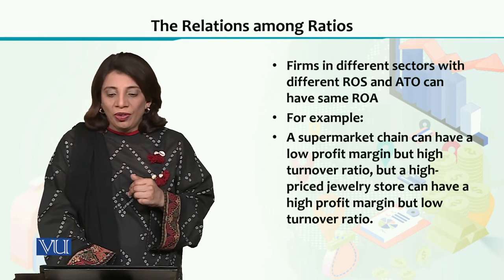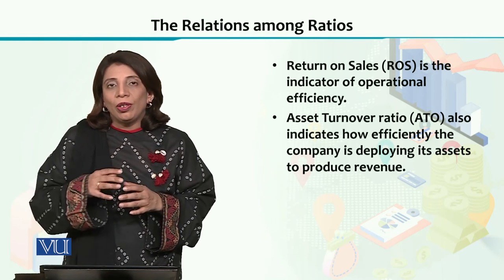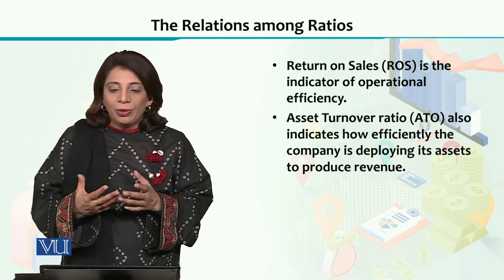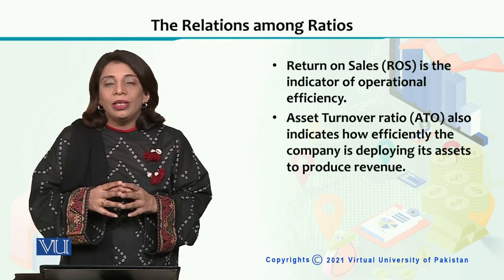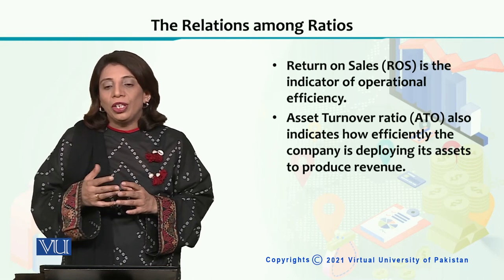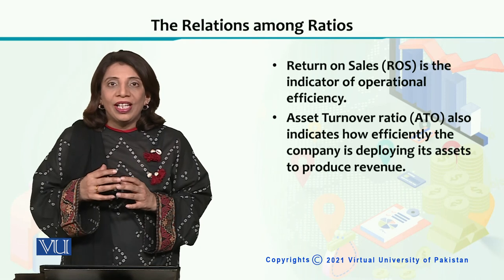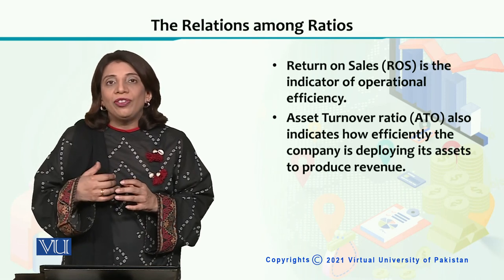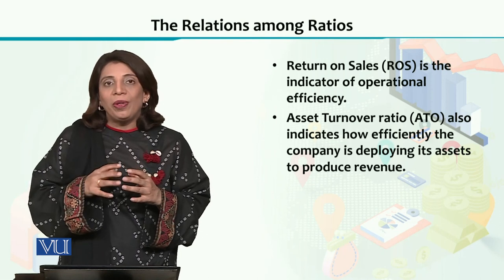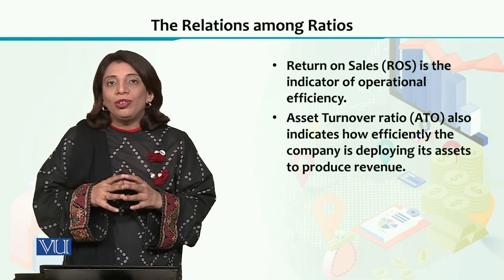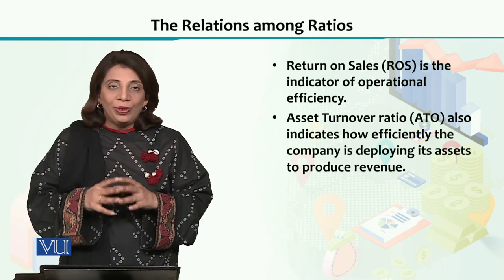These are two important things to understand. ROA tells us about the overall operational efficiency of a firm. Similarly, the asset turnover ratio indicates how efficiently a firm is deploying its assets to produce revenue — it is also a measure of operational efficiency, showing how well the firm is executing its activities to fulfill its objectives.